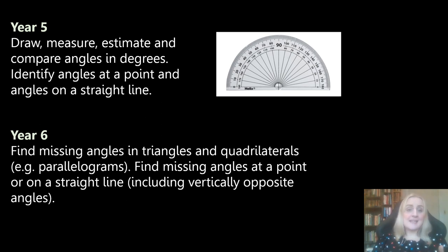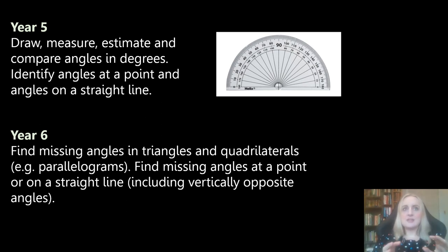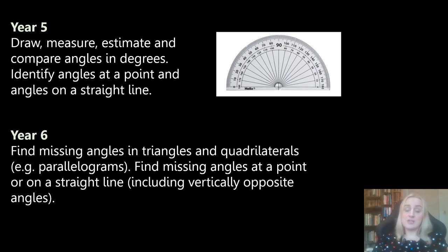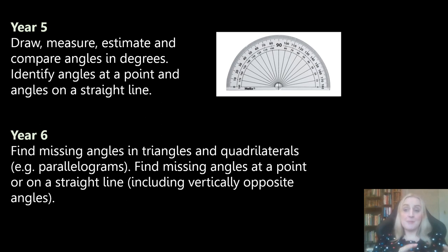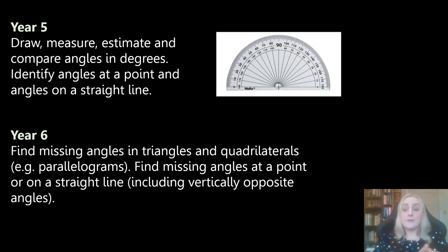Students in Year 6 are also finding angles in triangles and missing angles in quadrilaterals. Note that they do have to know that opposite angles in parallelograms are equal, but they are not introduced to why that is in terms of parallel lines and co-interior angles. Angles in parallel lines is very much a secondary topic, but angles in parallelograms does appear on the primary curriculum. Students at this point are also finding missing angles at a point, on a straight line, and including vertically opposite angles — so that angle fact does come up at primary school.